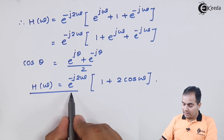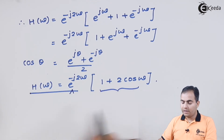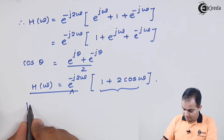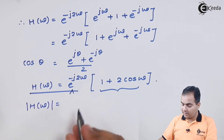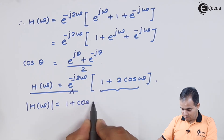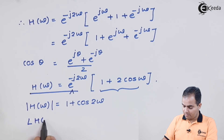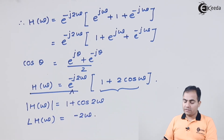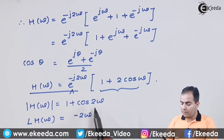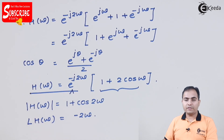From this equation, the phasor part is e to the power minus j2ω, and the rest is the magnitude response. So the magnitude response |H(ω)| = 1 + cos(2ω), and the phase response can be calculated from the term minus 2ω. Now I will substitute omega values to get the response and then draw the graphs of magnitude and phase response.